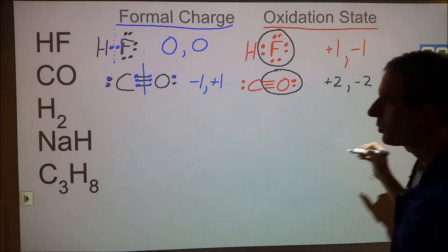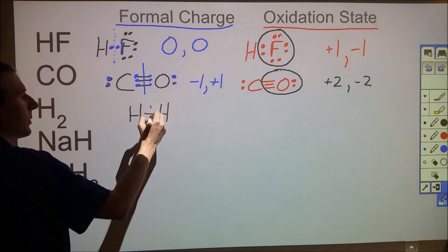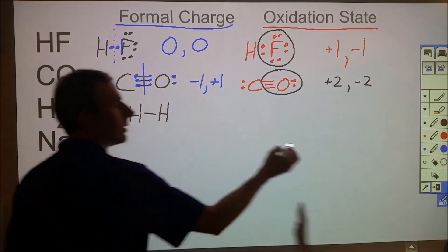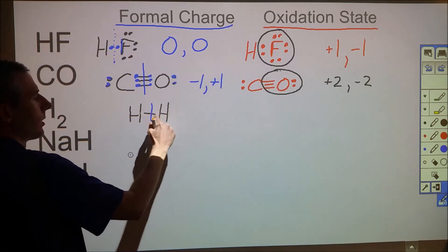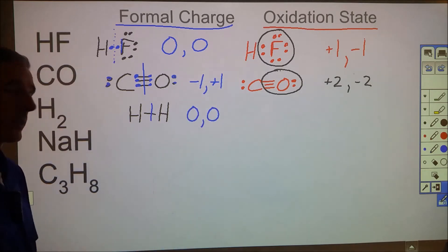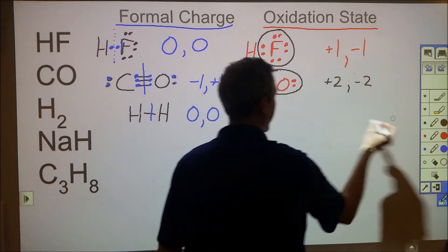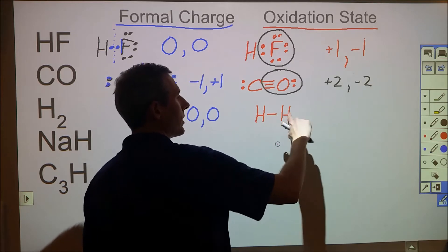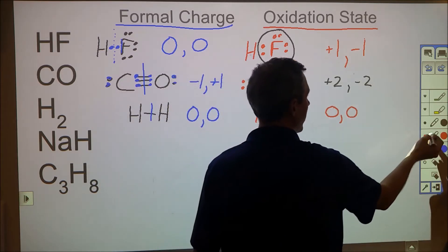For H2, the bond electrons split down the middle — one electron for each hydrogen — so both get a formal charge of zero. For oxidation states, when you have two identical atoms bonded together, it's considered a tie. There's no reason to prefer one over the other, so both get an oxidation state of zero.